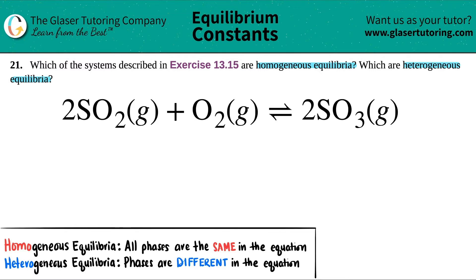In this case we have to find out if 2SO2 gas plus O2 gas, which comes to equilibrium with 2SO3 gas, whether this is homogeneous or whether it's heterogeneous.